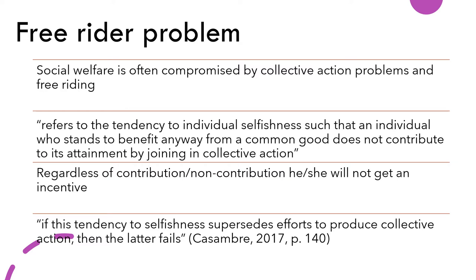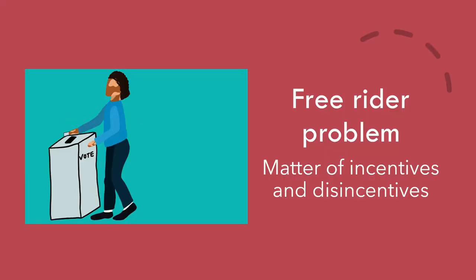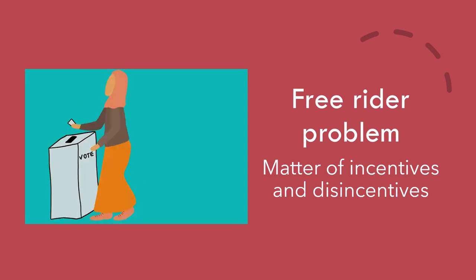People will think that even though they do not protect the environment — for example, by not buying cars and taking public transportation or riding bicycles instead — other people will do it for them. Regardless of one's contribution or non-contribution, they will get the incentive of a good and clean environment. This is because they rationalize there is actually no disincentive or punishment for choosing not to help. Collective action then fails. What the free rider problem reinforces is the key idea of rational choice theory: that people act based on their perceived incentives and disincentives.